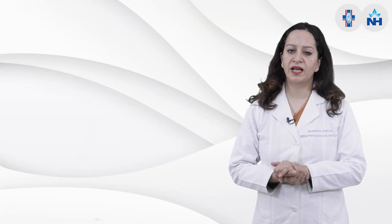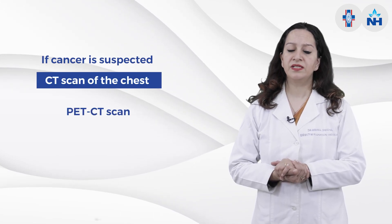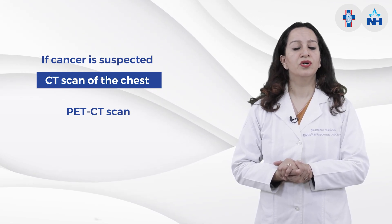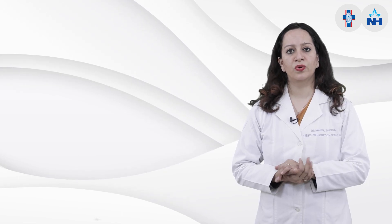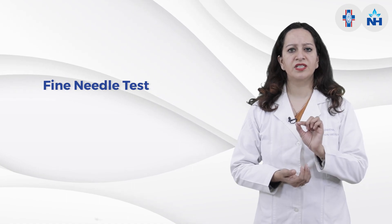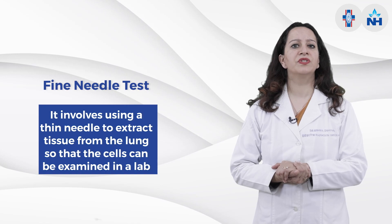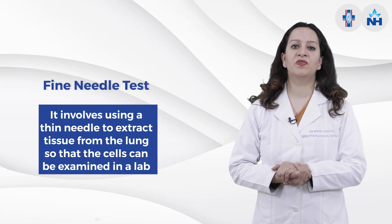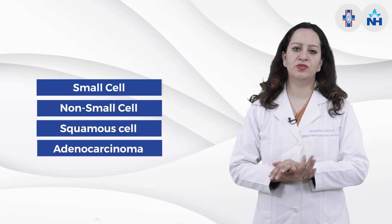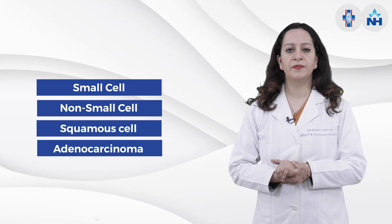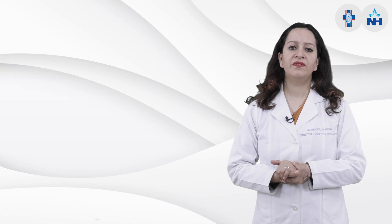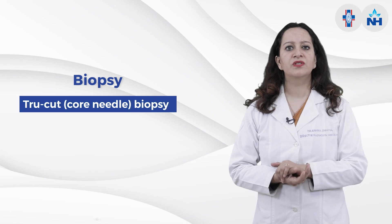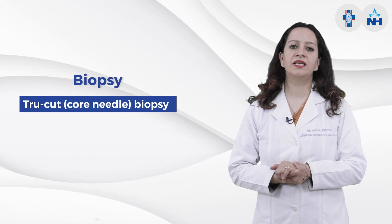If there is a suspicion of cancer, the doctor will order a CT scan of the chest, or a PET-CT scan if cancer is confirmed, to know how advanced the tumor is. After radiology, the next step is confirmation of diagnosis through a needle test — either a fine needle aspiration where tiny needle prick extracts tumor cells viewed under the microscope, to determine whether it is small cell, non-small cell, squamous cell, or adenocarcinoma.